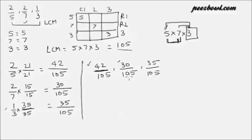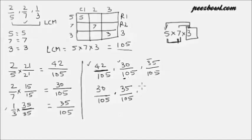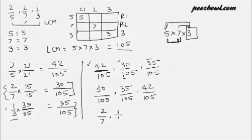And 30 upon 105 has the least fraction value. We need to arrange these fractions in increasing order, so the fraction with least value comes first — that is 30 upon 105. After that, 35 upon 105. And at last, we have 42 upon 105, which has the highest fraction value. Now, 30 upon 105 is 2 upon 7, so fraction 2 upon 7 has the least value. Then 35 upon 105, which is 1 upon 3. And at last, we have 42 upon 105, which is 2 upon 5. So this is how we arrange fractions in increasing order of their value.